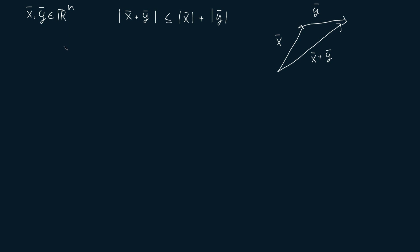Hi, in this video I'm going to show you how to prove the triangle inequality for vectors in Rn. What the triangle inequality states is that the magnitude of the sum of two vectors x and y in Rn is always less than or equal to the magnitude of x plus the magnitude of y.